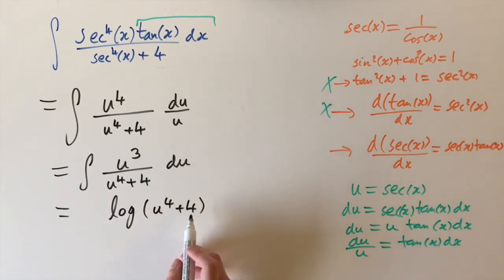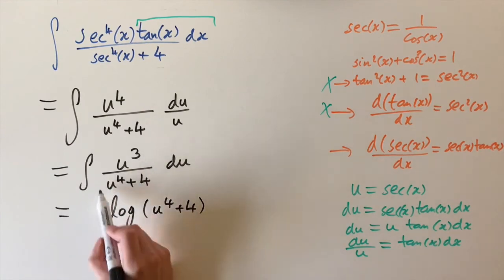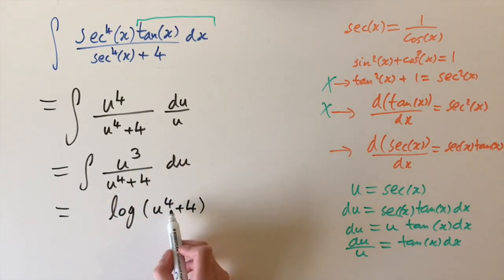So if we differentiate this, we get the u to the power of four plus four on the denominator. And then on the numerator, we would have, well, the constant vanishes, but we'd get four u cubed.